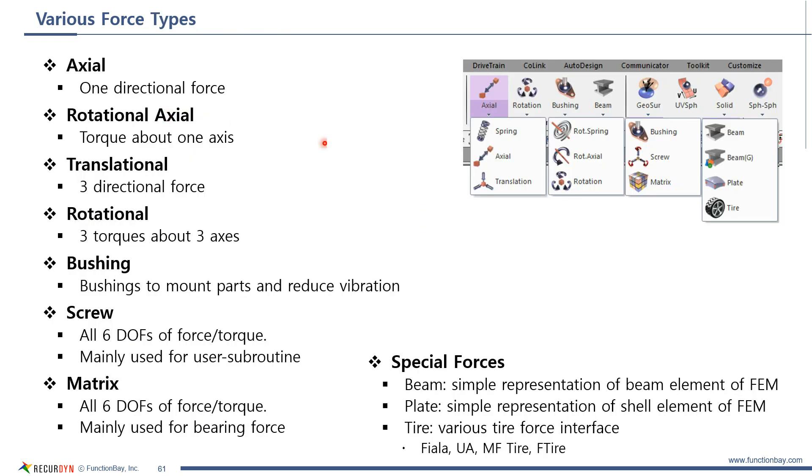Axial force is one directional force. Rotational axial force is a torque about one axis. Translational force is three directional force. Rotational force is three torques. Please note that translational force and rotational force can use reference marker. Bushing force is a force component to mount a part in a mechanical system. While fixed joint fixes the parts perfectly, clearance exists in bushing force. Matrix force and screw force can apply force and torque to all six degrees of freedom. Especially, these are used to represent a user subroutine or bearing force. And there are some special forces like beam, plate, tire.